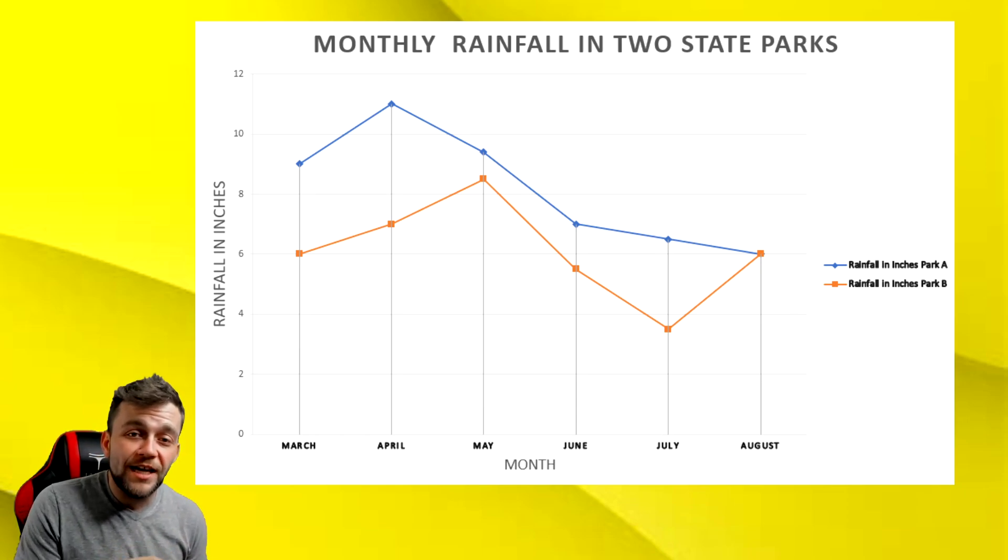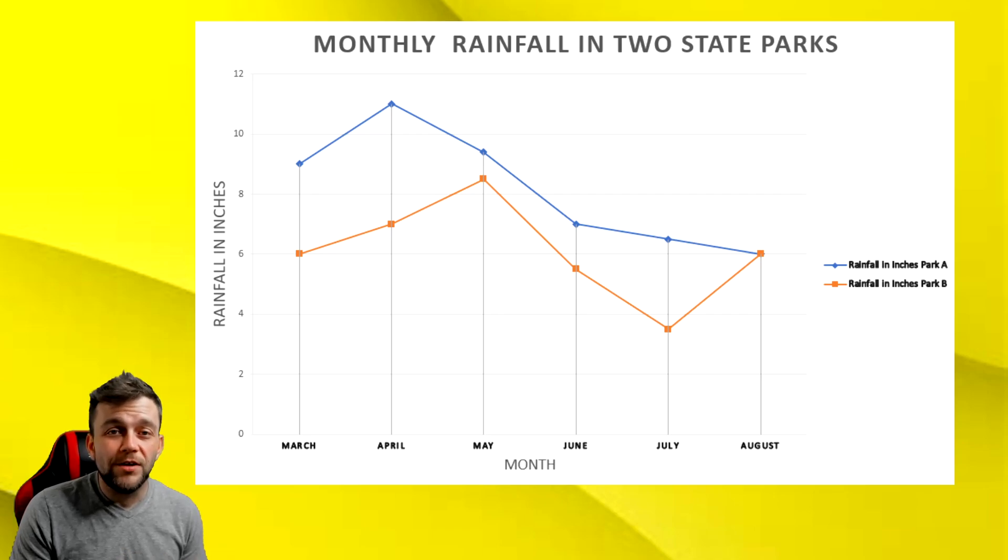This is the type of question that you're going to get on the GED. So when we're looking here, it looks like April. It looks like April has the biggest gap. And we can tell by, you know, if you don't get those lines in between, you can draw them in between. It just looks to me that April is the biggest gap in rainfall between the two state parks. What month has the smallest gap in rainfall between the two state parks? Well, it looks like May.